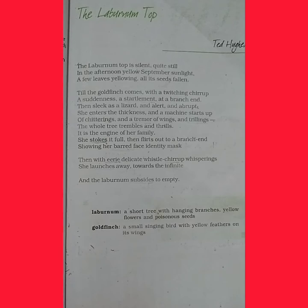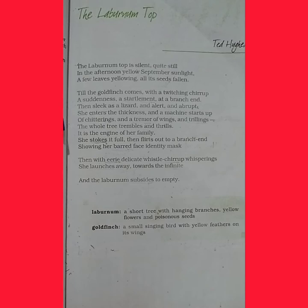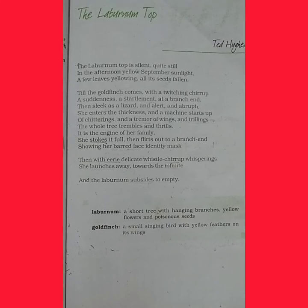'Of chitterings and trimmings of wings and trillings.' These are all sound words made by the birds. Trimmings of wings means the birds start flapping their wings; trillings are the sounds they produce. As soon as she enters the thickness, the whole tree comes alive with movement — it trembles and thrills, becoming vibrant with life.